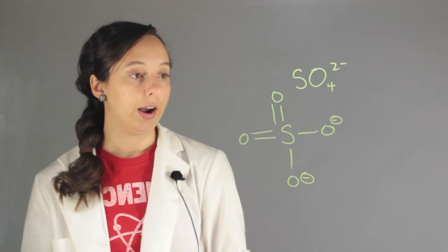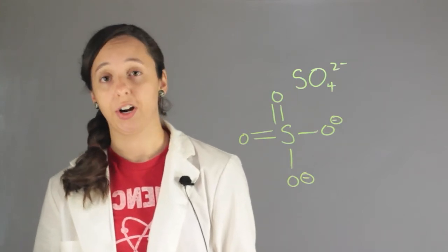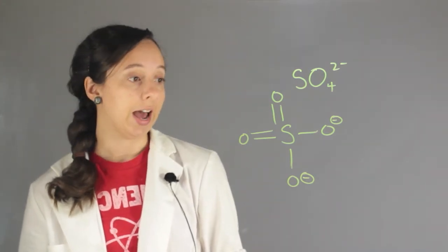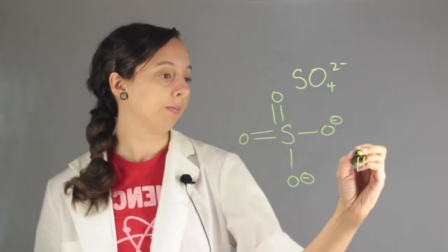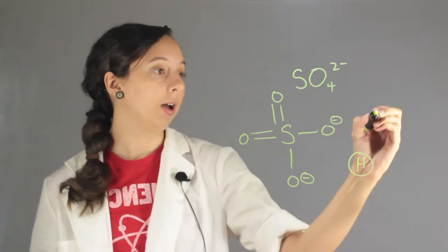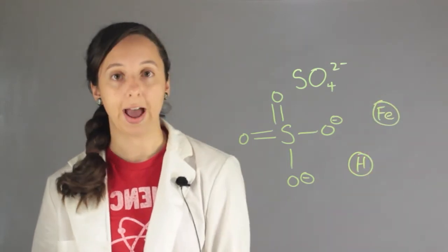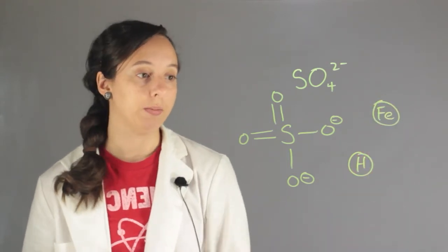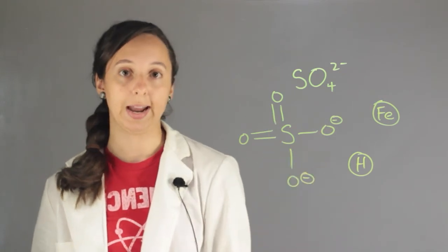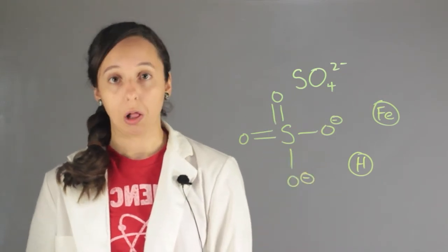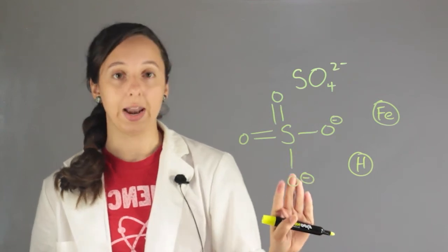Remember, anything that's an atom has to come directly from the periodic table. So if we just had one hydrogen atom, that's an atom. Or one iron — that's an iron atom. But as soon as we start making bonds and connecting things, that's no longer going to be an atom. That's why we start calling them molecules. So this is going to be a molecule, not an atom.